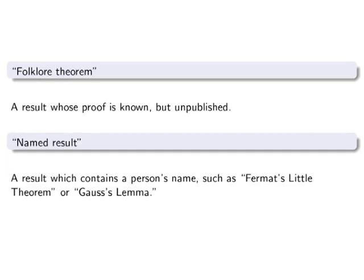Folklore theorem. A result whose proof is known, but unpublished. Sometimes results persist in being called the folklore theorem, even after they have been published, if they remained unpublished for an extremely long time. Named result. A result which contains a person's name, such as Fermat's Little Theorem or Gauss's Lemma.